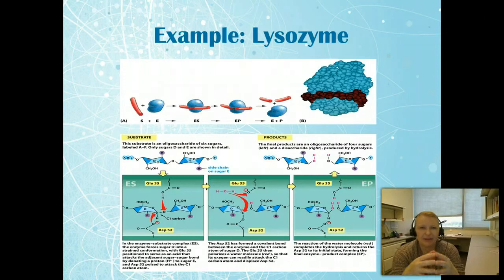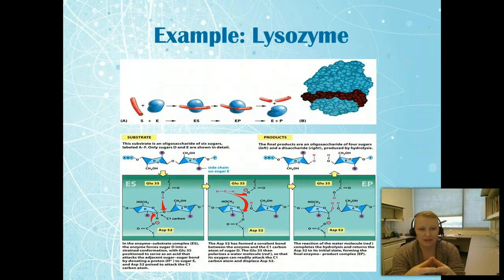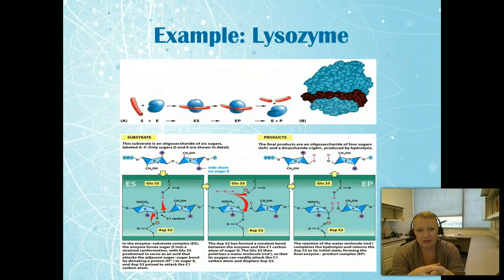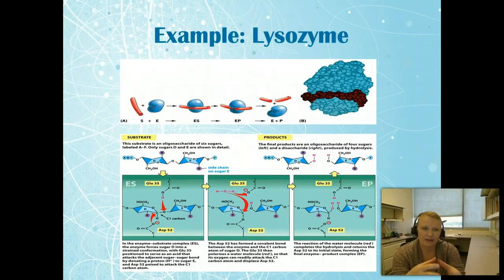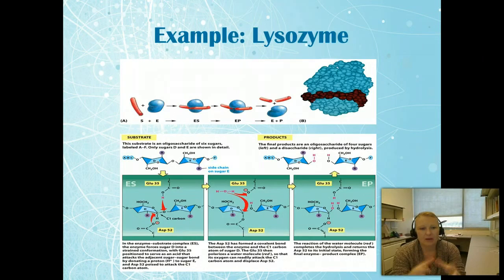Let's look at how enzymes function using lysozyme, which breaks down carbohydrates. First, the substrate plus the enzyme come together to form the ES complex. Once the enzyme starts to break down the substrate, that becomes the EP — enzyme plus product — and then they separate into E and P. The enzyme-substrate complex forces the shape of the two sugars to change slightly, which changes the activation energy needed and makes those sugars more likely to break apart. That's how a classic enzyme works.